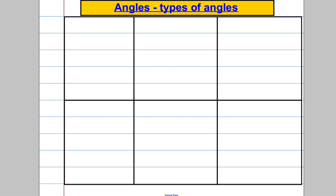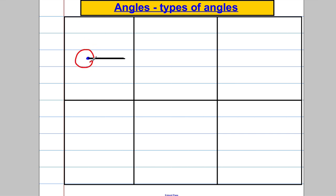The first type doesn't even look like an angle. Imagine a vertex where two lines are on top of each other, and you twist one line all the way around until it comes back to the original — that's what we call a full turn. This angle, going all the way around, is 360 degrees.